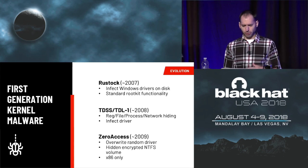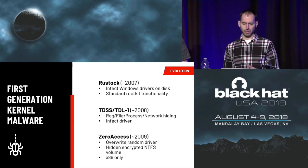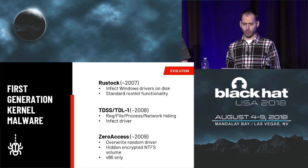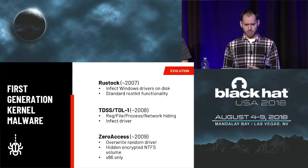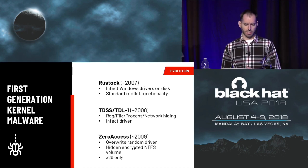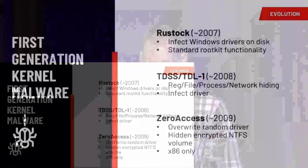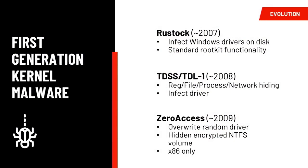The first generation of kernel malware emerged roughly ten years ago, when widespread kernel threats first came onto the scene. At the time there were basically no defenses baked into Windows to counter these threats, so they flourished. Rustock, TDSS, and ZeroAccess were a few big ones with botnets numbering in the millions. They all shared a similar technique for gaining ring zero code execution — infecting drivers on disk so that when those drivers loaded, they got kernel code execution. They also commonly deployed rootkit-style technologies: hiding files, network connections, registry keys, and that sort of thing.